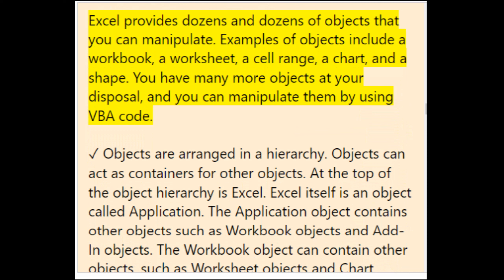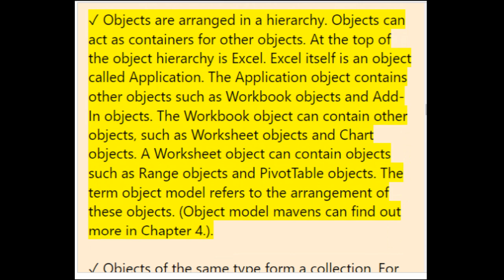Excel provides dozens of objects you can manipulate, including a workbook, a worksheet, a cell range, a chart, and a shape. Objects are arranged in a hierarchy — objects can act as containers for other objects. At the top is Excel itself, called the Application object. The Application object contains workbook objects and add-in objects. A workbook object contains worksheet and chart objects. A worksheet object contains range and pivot table objects.